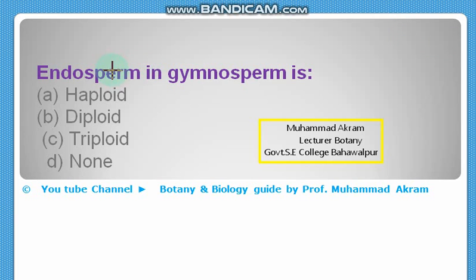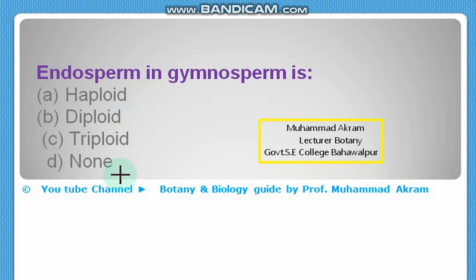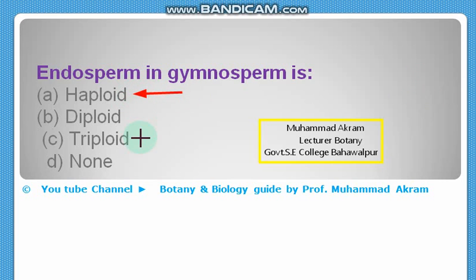The endosperm in gymnosperms is — haploid, diploid, triploid, or none? The right option is haploid. The endosperm of gymnosperms is haploid.